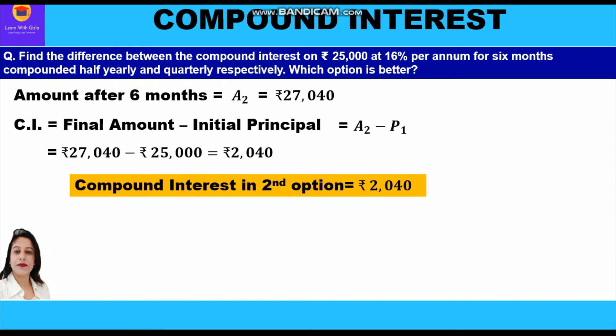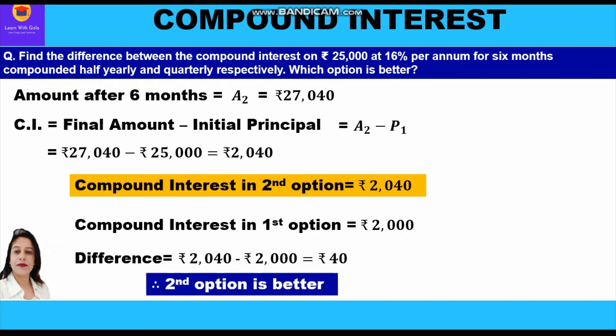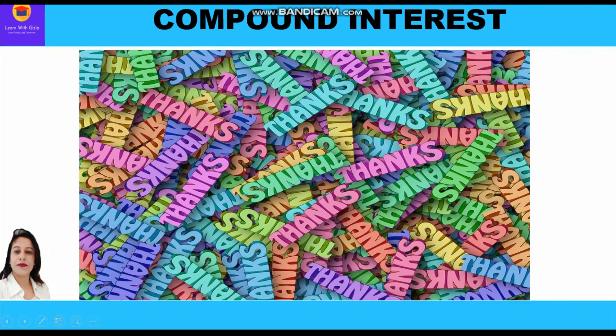Compound interest in the first option was Rs 2,000 and in the second option it is Rs 2,040. The difference between the two is Rs 40. So the second option is better — when you compound interest quarterly you get more interest than when it is compounded half yearly. Hope you have understood the question and the steps involved. Please like and subscribe to the channel. Thank you everyone, have a good day.